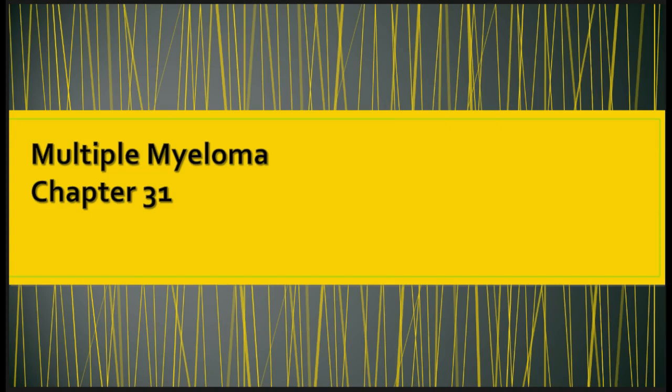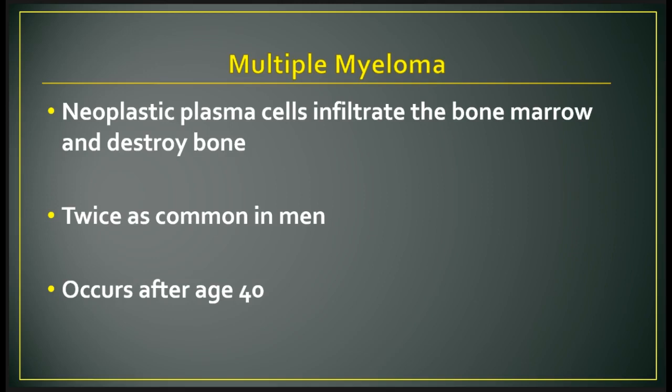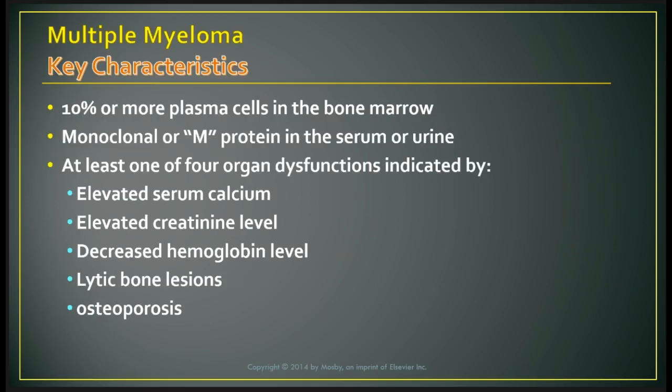Multiple myeloma is a disease in which neoplastic plasma cells infiltrate the bone marrow and destroy bone. It is twice as common in men and usually occurs after age 40. The cause is unknown, but risk factors include exposure to radiation, pesticides, Agent Orange, viral exposure, and chronic immune stimulation. Incidence is increased among farm workers, petroleum workers, wood and leather workers, and is high among African Americans. It develops slowly and insidiously with symptoms not appearing until the disease is advanced.